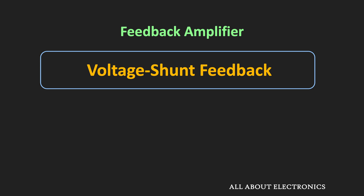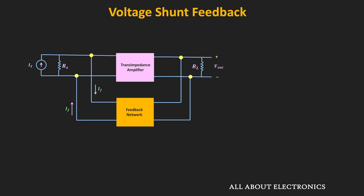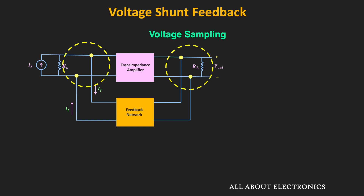So similarly, in this video, we will learn about the voltage-shunt feedback amplifier. If you see the basic topology, it consists of the basic trans-impedance amplifier and the feedback network. In this feedback topology, the input signal is applied as a current source and the output is a voltage signal. This output voltage signal is sampled using the feedback network, and on the input side, it is mixed with the input current via the shunt feedback. That means we have voltage sampling and shunt mixing.